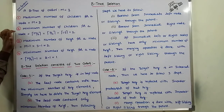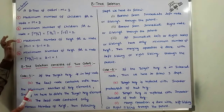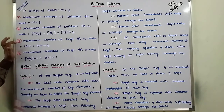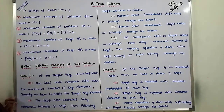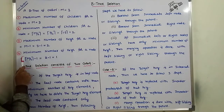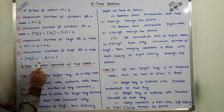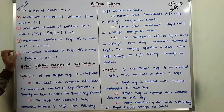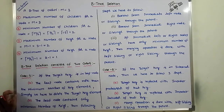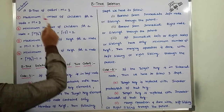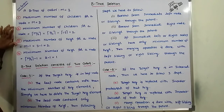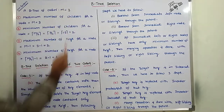The maximum number of key elements for a node is M minus 1. For M equal to 3, that is 3 minus 1, which equals 2. The minimum number of key elements for a node is ceil(M/2) minus 1. So 3/2 is 1.5, ceiling is 2, minus 1 equals 1. So minimum key elements is 1, maximum is 2, minimum children is 2, maximum children is 3. These are the conditions for a B-tree of order M equal to 3.